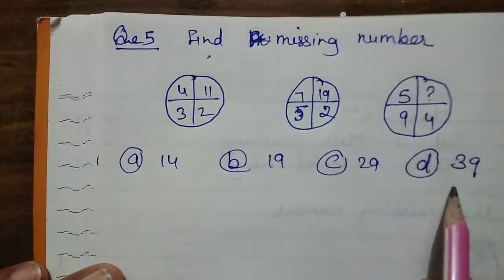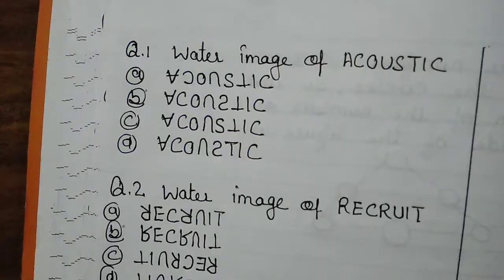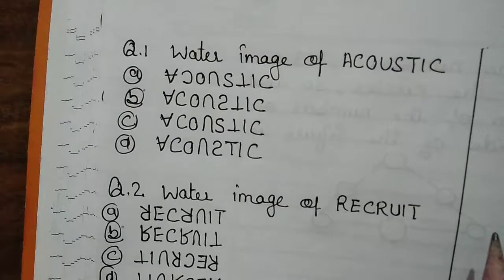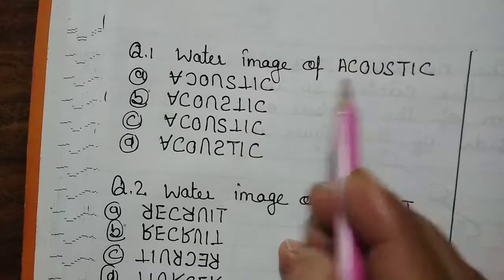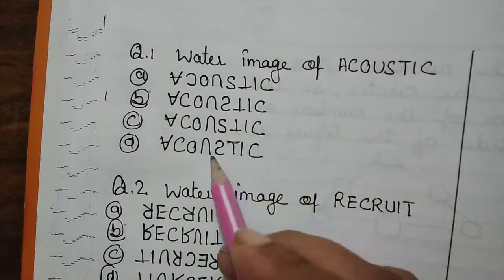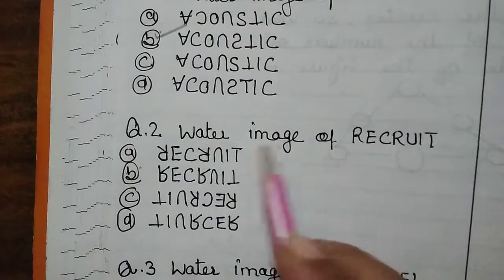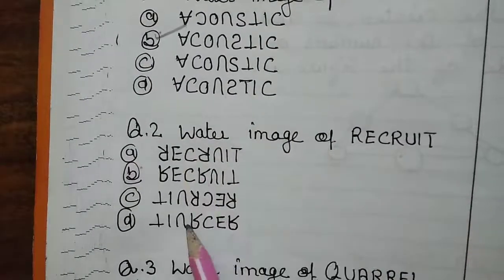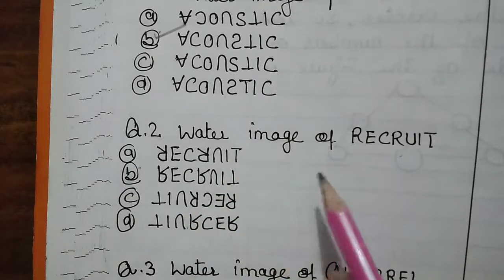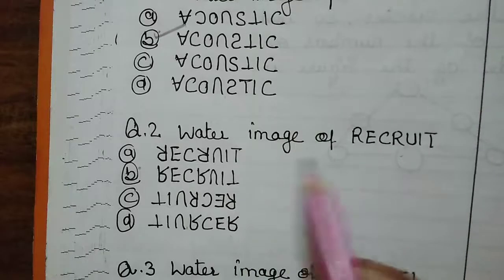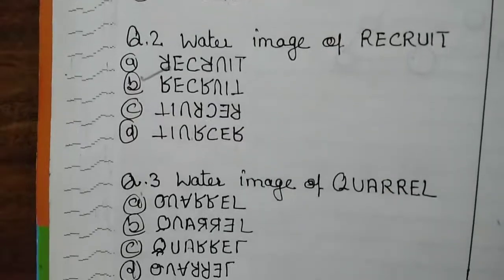Try to solve this question. Now I am going to discuss with you the previous homework assigned to you. The previous homework is based on water image. The first question is the water image of 'acoustic' — you have to select the correct option out of four, and the correct option is B. Now in the second question, in water image the top and bottom part of each alphabet change, so the second option is correct.